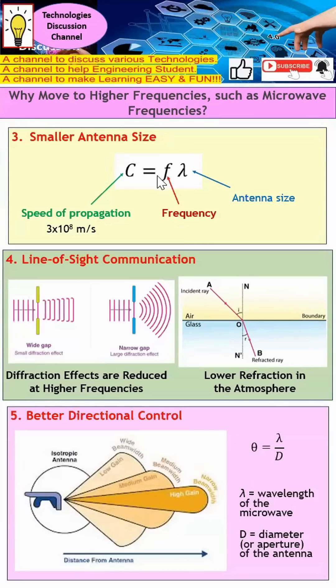From here, you can see that when I increase the frequency, I reduce the antenna size, because the speed of propagation for electromagnetic wave will be constant. So when frequency increases, the antenna size also reduces.